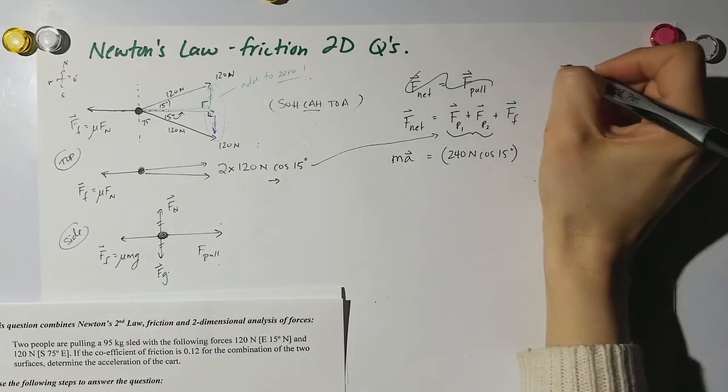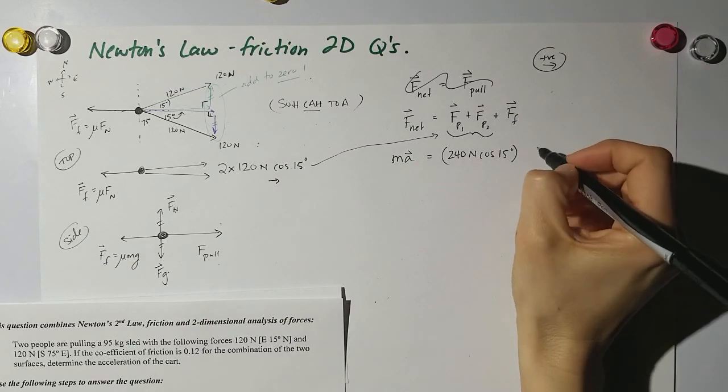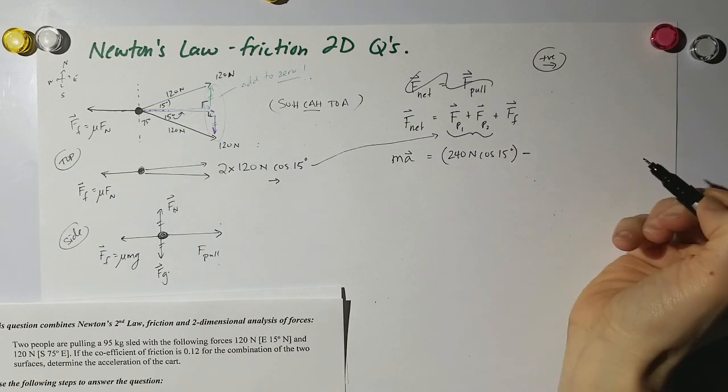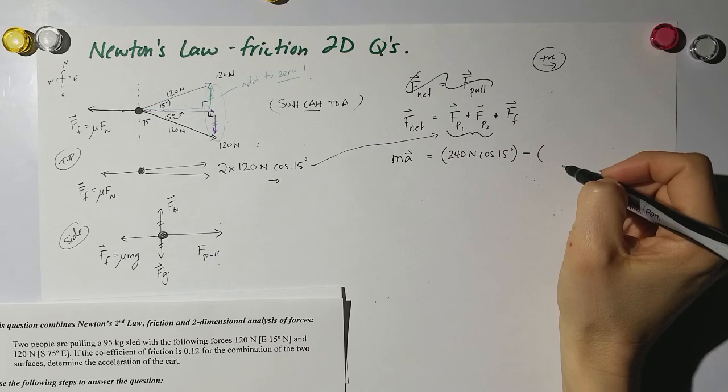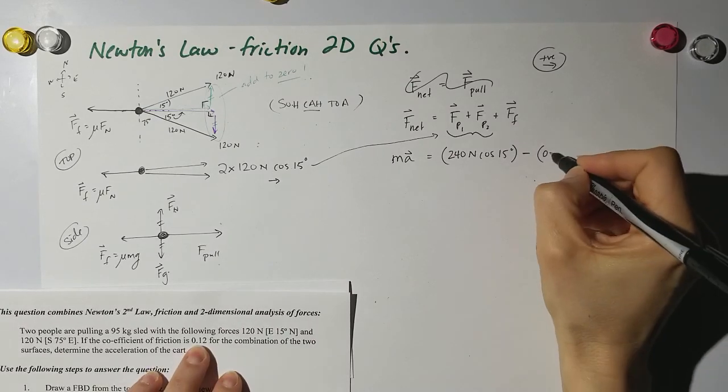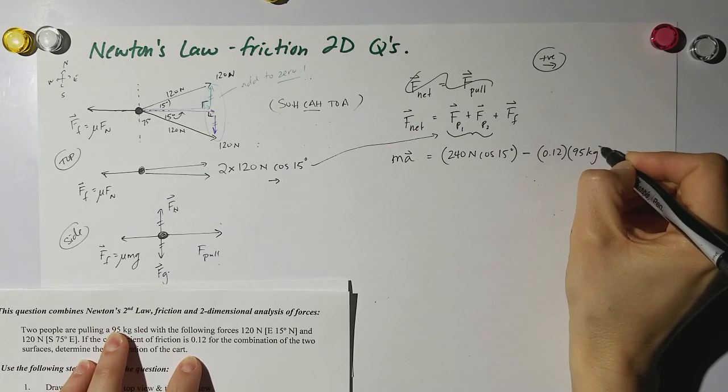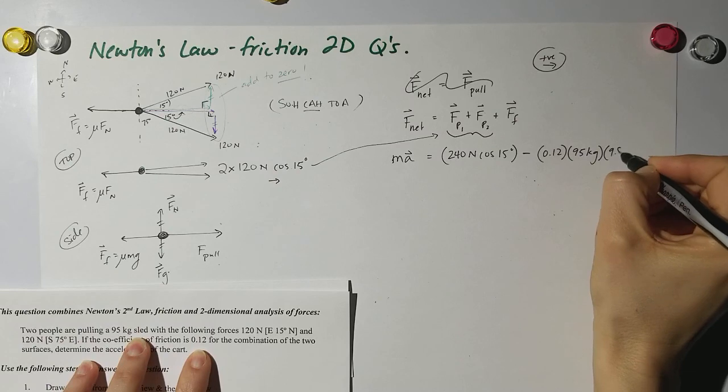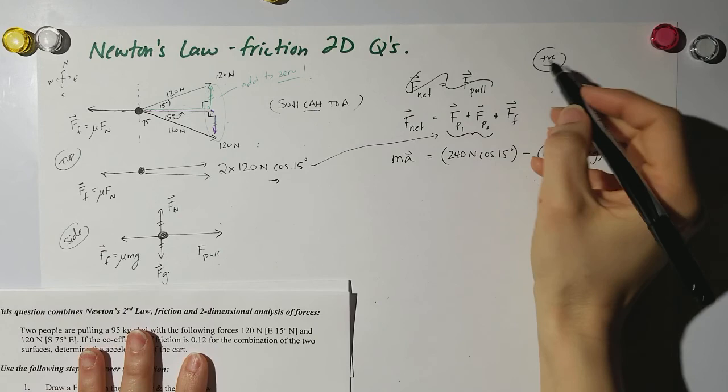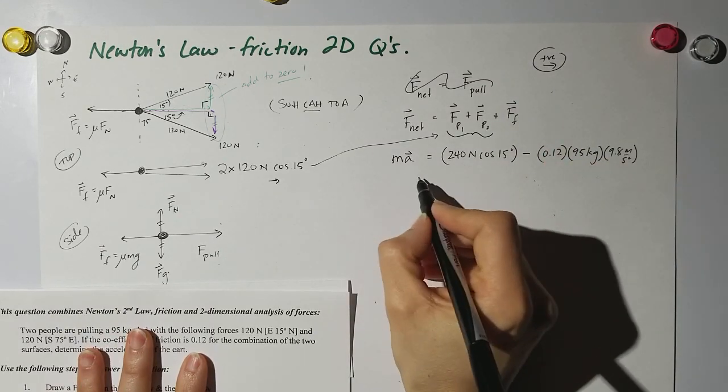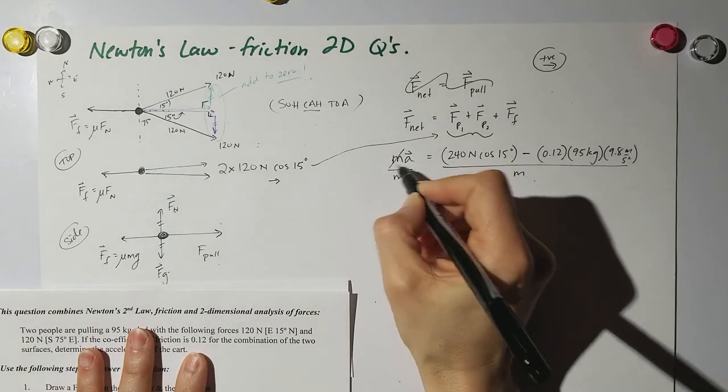To the right is positive, and instead of adding this I'm going to subtract the mu mg because the force of friction is mu mg. So mu is 0.12, m is the mass of my sled which is 95 kilograms, and g is 9.8 meters per second squared. I'm not going to bother putting any direction in here because I just said positive is to the right. Now I'm trying to solve for acceleration, so the last thing I need to do is divide by m, which we said is 95 kilograms.